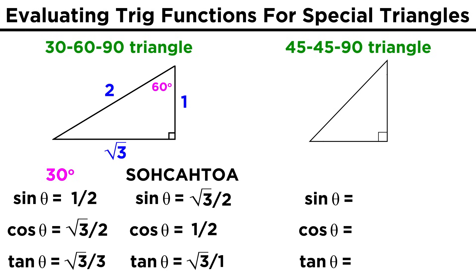We can use the same triangle to evaluate the same functions for the sixty degree angle. Sine of sixty is root three over two. Cosine of sixty is one-half. And tangent of sixty is root three over one, or simply root three.